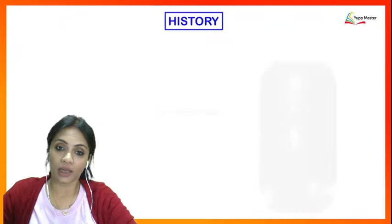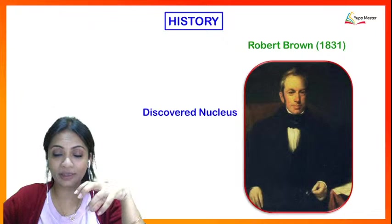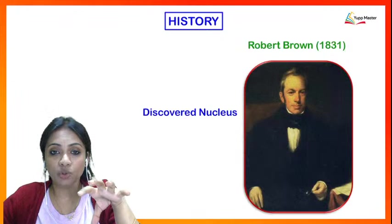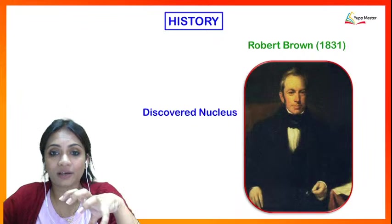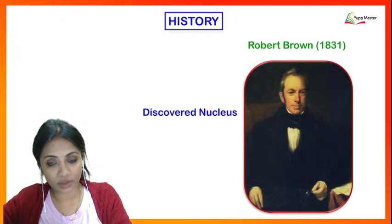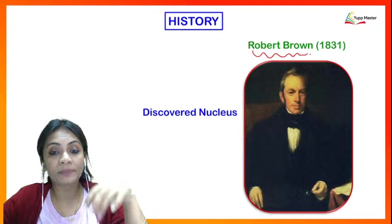The most important and prominent constituent found in a cell is the nucleus. The nucleus was discovered by Robert Brown in the year 1831. So the person who discovered the cell was Robert Hooke, the person who discovered the nucleus was Robert Brown, and the person who prepared the next compound microscope was Anton van Leeuwenhoek.